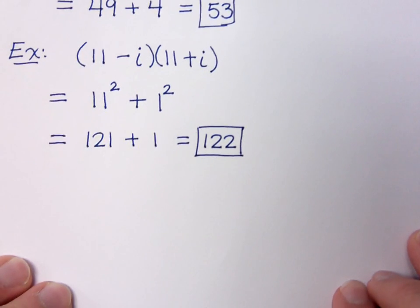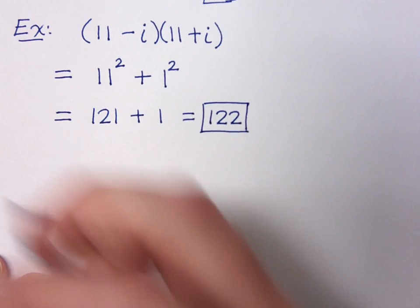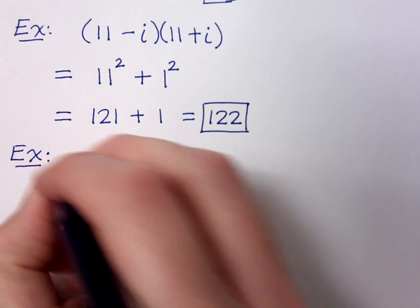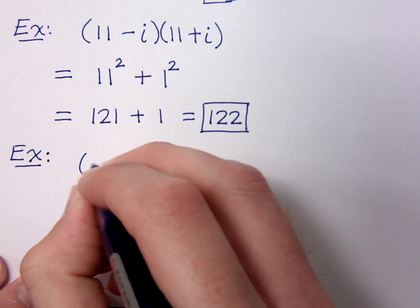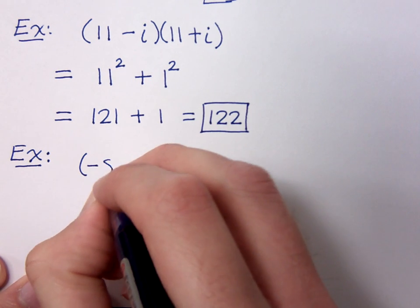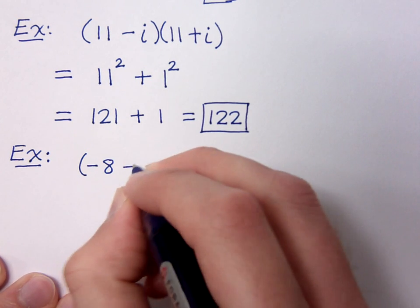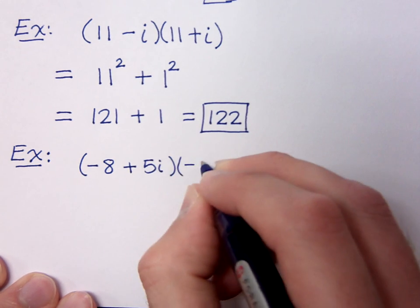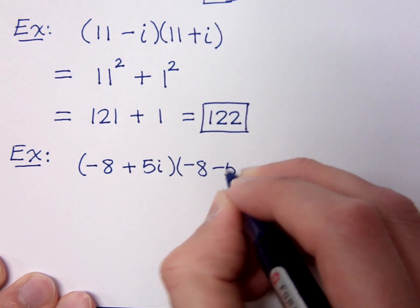All right, let's try one more. Suppose we have negative 8 plus 5i times negative 8 minus 5i.